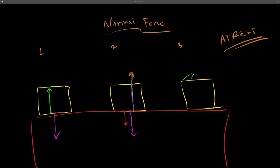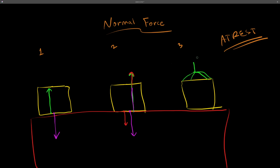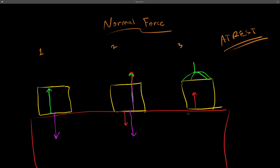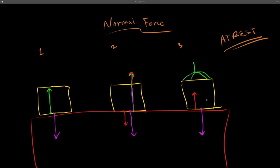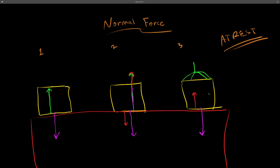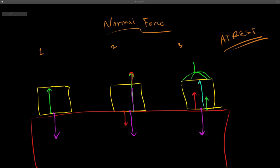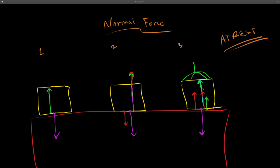In the third case, I add a string on the box and pull it upwards, exerting a force upwards. This counteracts gravity. The normal force is now going to be less because the upward pull helps support the box. The normal force plus the upward string force together equal the force of gravity, which is why the object doesn't move.